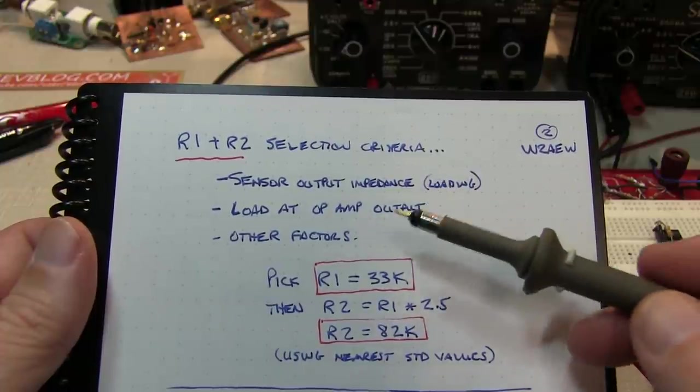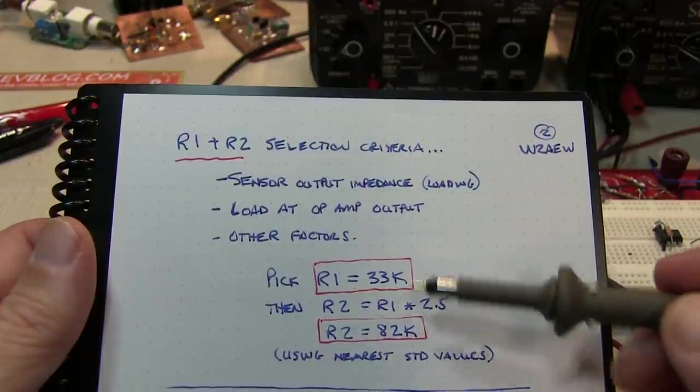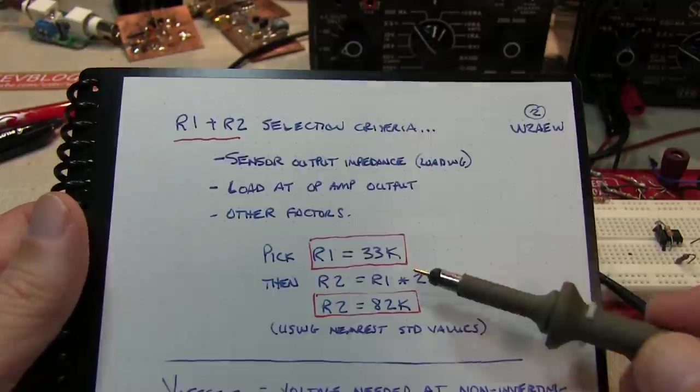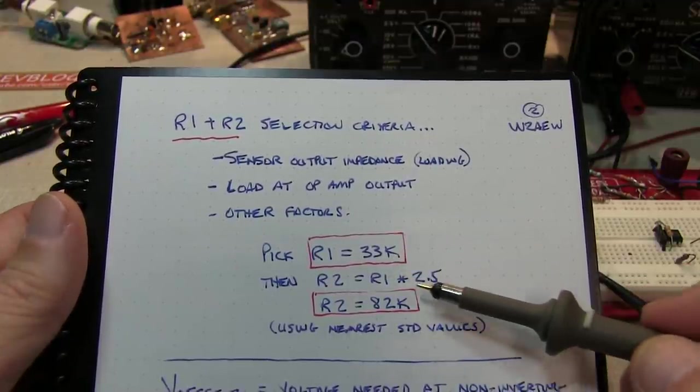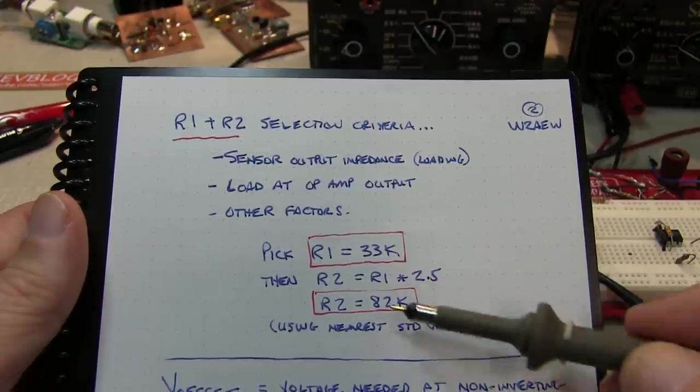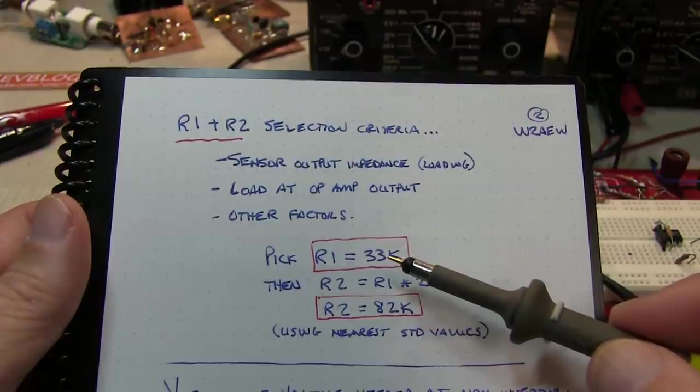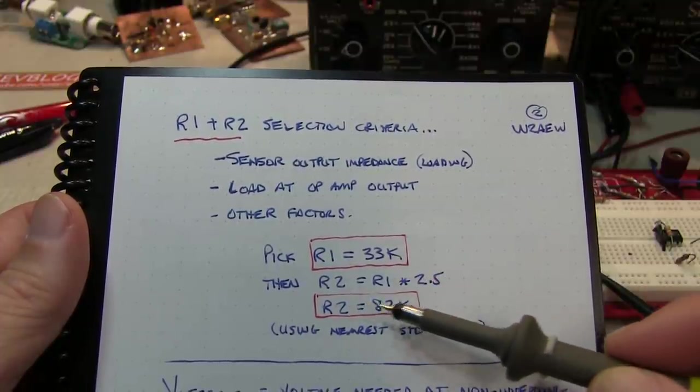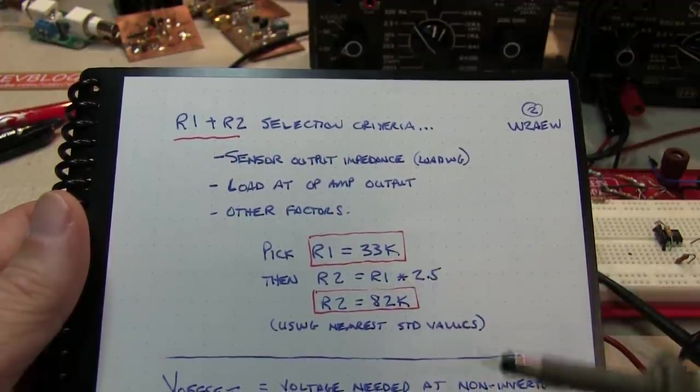For a number of these reasons, we want these currents in R1 and R2 to be in the tens of microamps, so we're looking at tens of K for the resistor values. I played around with these values a little bit until I found some standard values. If we start with R1 of 33K, multiply that by 2.5, the next closest standard value is 82K. So that'll be our R1 and R2.